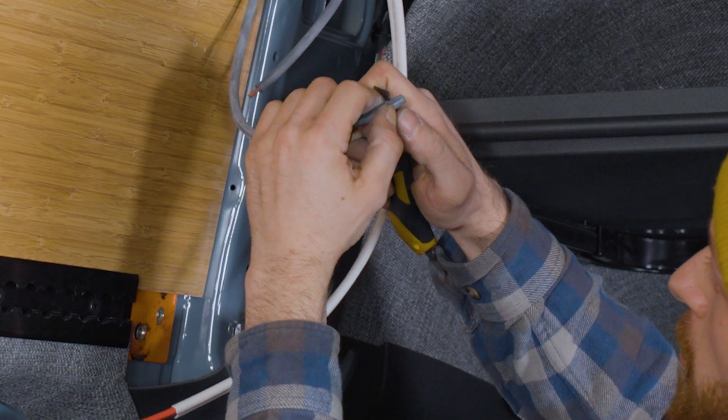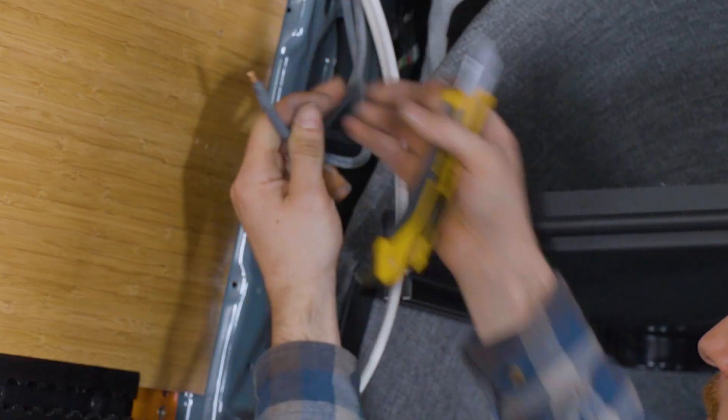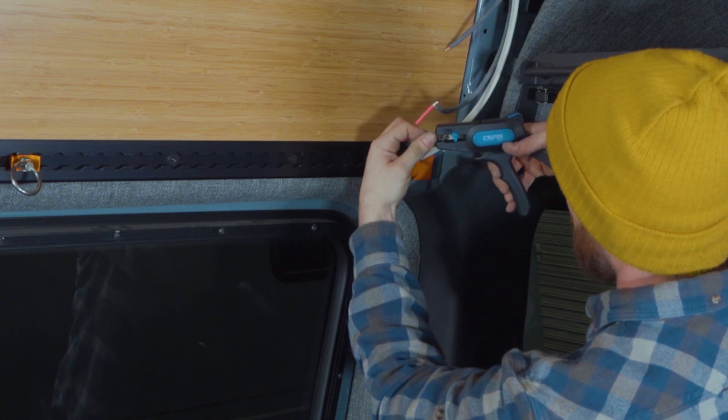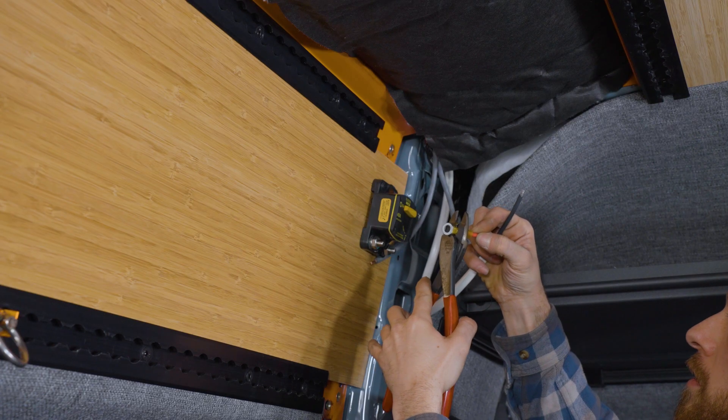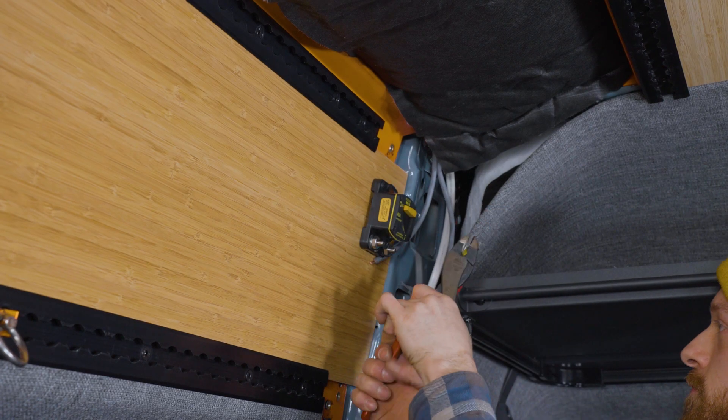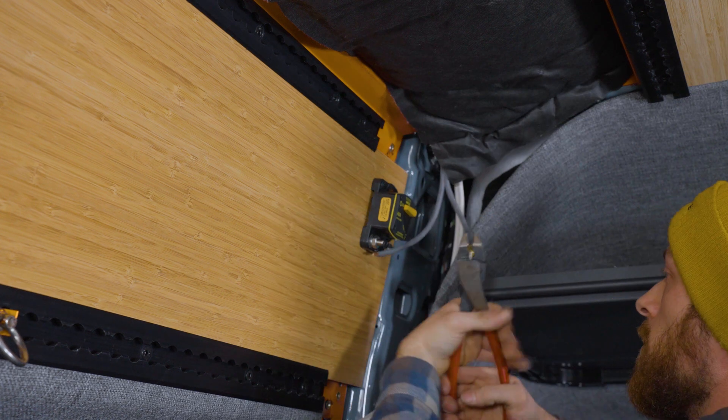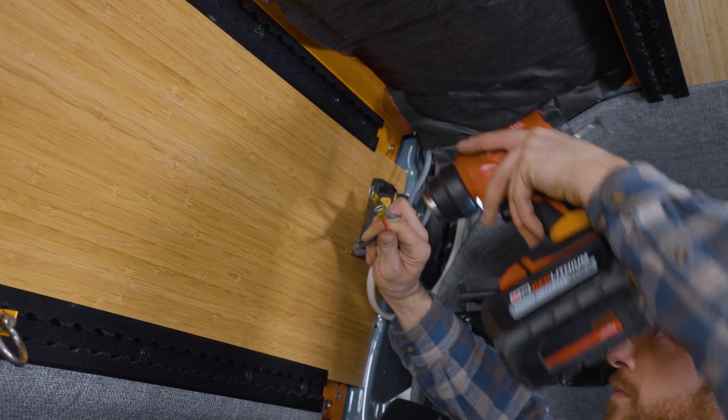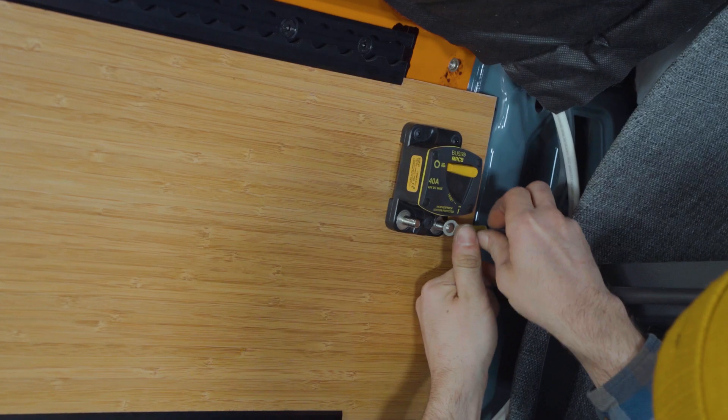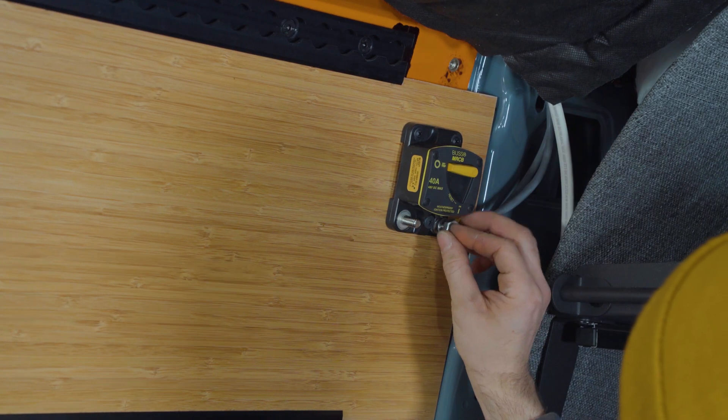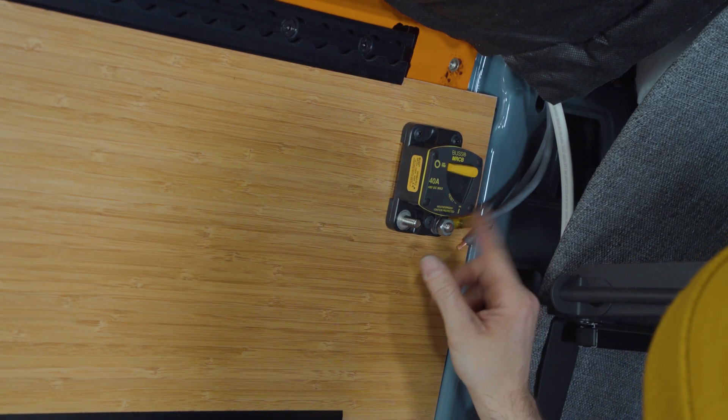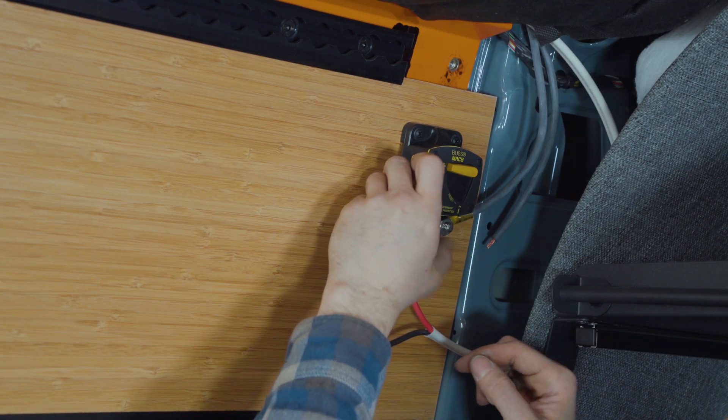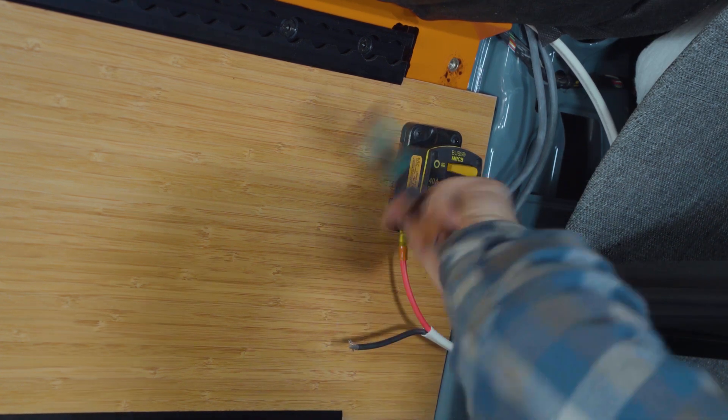And then we're crimping on some ring terminals to the positive photovoltaic cable coming through the solar gland and the red positive cable coming from the wall. And now we're connecting the two positive connections to this breaker. You can see the red positive cable that's coming out of the wall is going to the post on the bottom left corner of the breaker. And the positive photovoltaic cable is going to be connected to the bottom right post on the breaker.